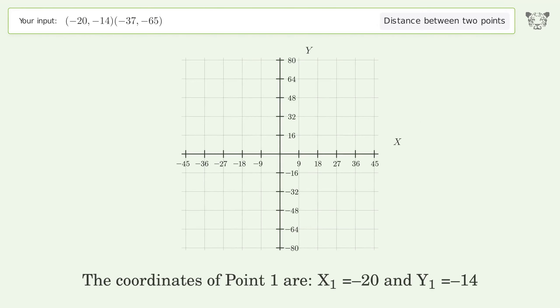The coordinates of Point 1 are x₁ equals negative 20 and y₁ equals negative 14. The coordinates of Point 2 are x₂ equals negative 37 and y₂ equals negative 65.